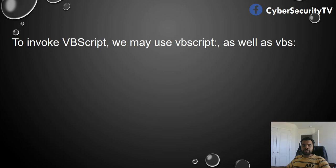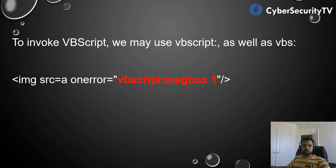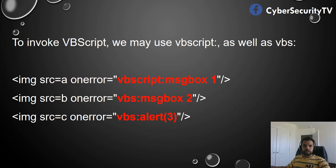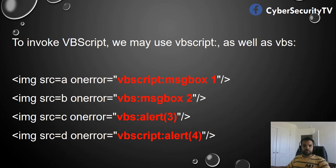Let's get down to the details on how you can bypass certain blocked rules by the WAF or filters. To invoke VBScript, we generally use VBScript as well as VBS. The first one is VBScript colon msgbox — similar to JavaScript alert. The other option is VBS and msgbox. These two are applicable for IE8. The third one is VBS alert, which is similar to JavaScript but using VBS. The last one is VBScript alert 4. If your application is supporting IE Edge, then the last two should work on that.